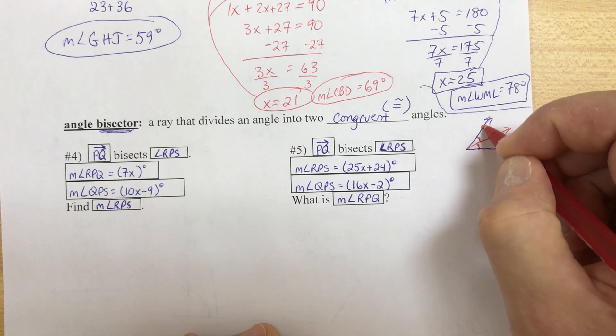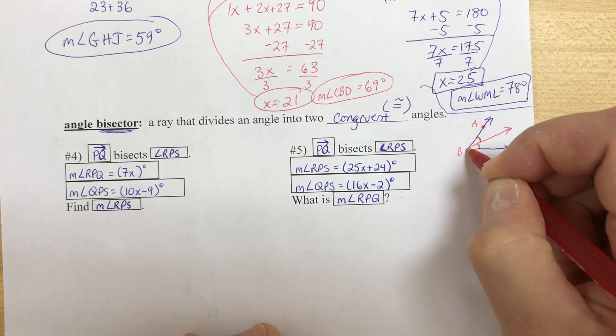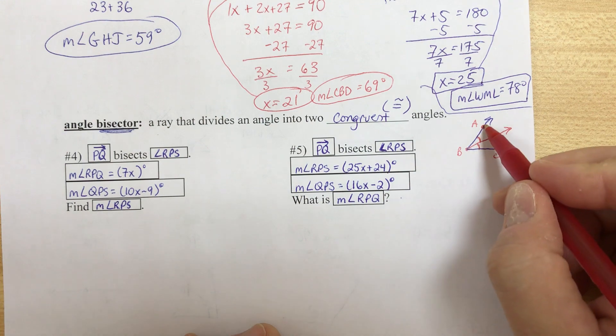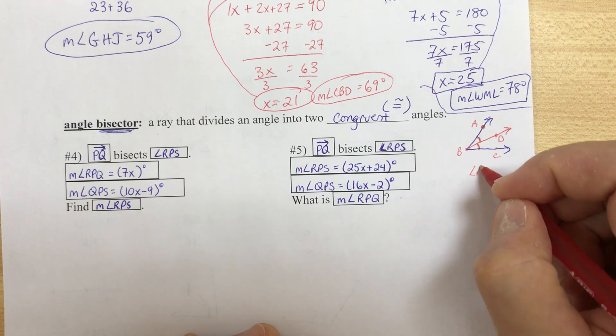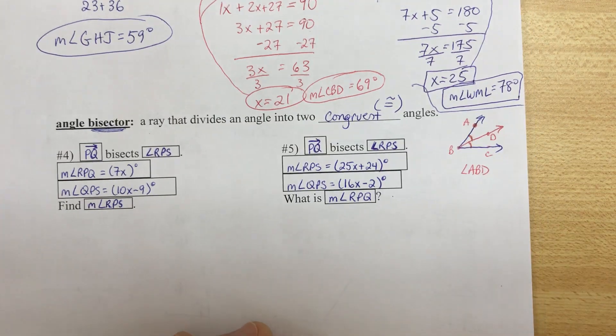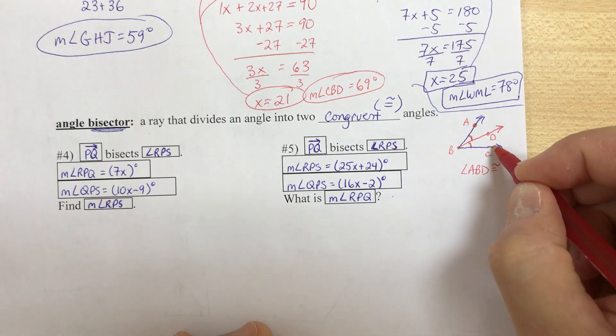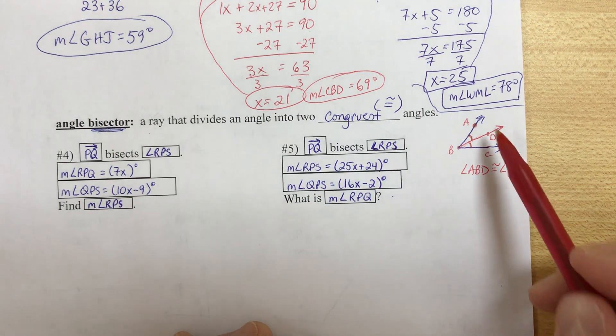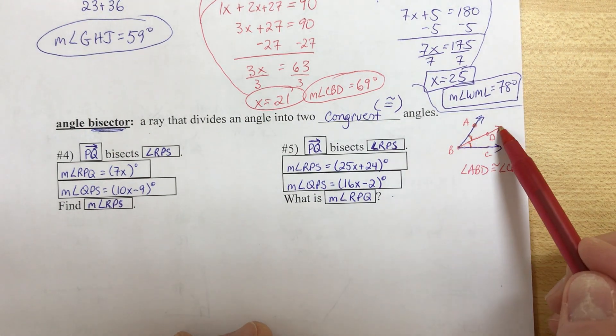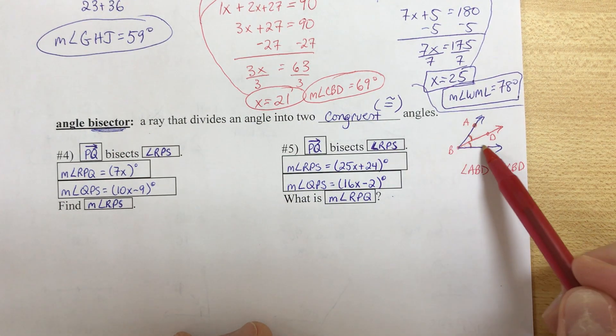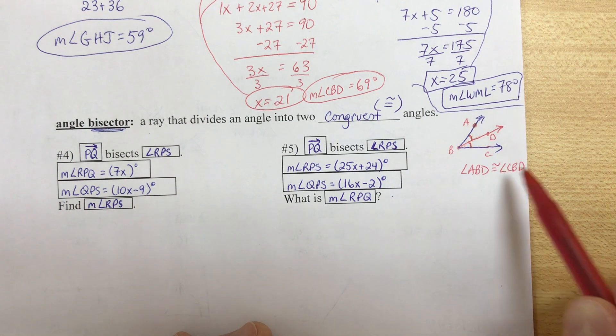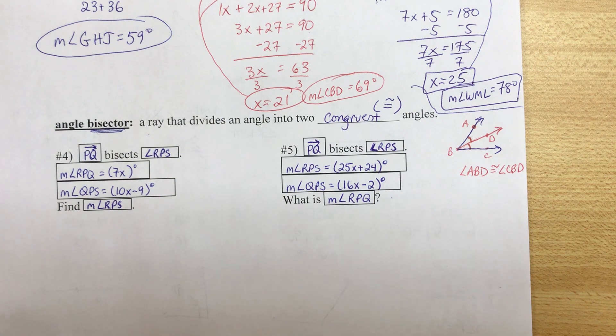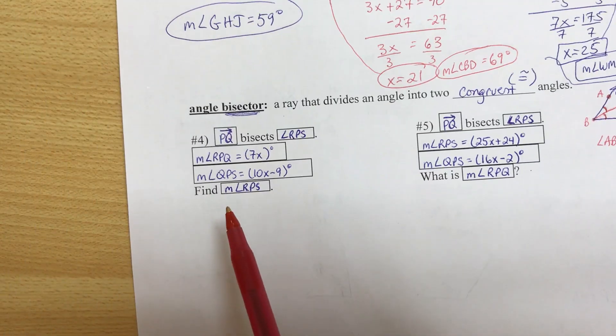So if I say, here's A, B, C, and here's D. That means angle ABD is congruent to angle CBD. That's how we would write that. Okay, so if BD, ray BD bisects angle ABC, that means these two small angles must be congruent. B is the vertex. Okay, so let's see if we can get number four and number five here.